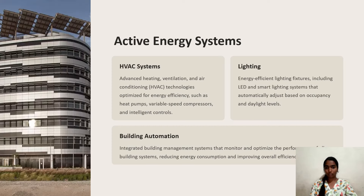Active energy systems include three types: HVAC systems, lighting, and building automation. HVAC systems use advanced heating, ventilation, and air conditioning technologies optimized for energy efficiency, such as heat pumps, variable speed compressors, and intelligent controls.